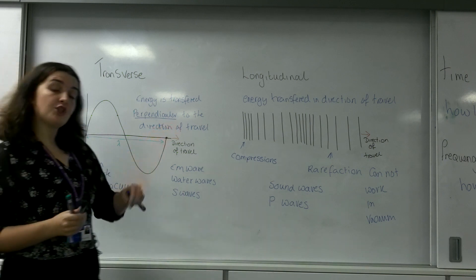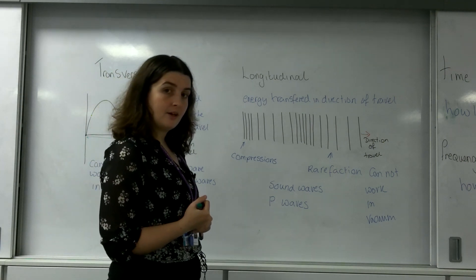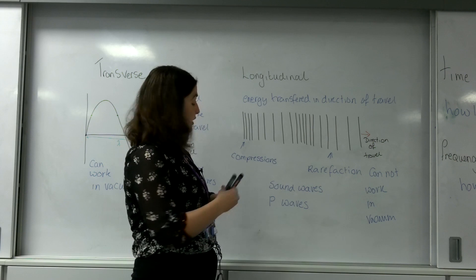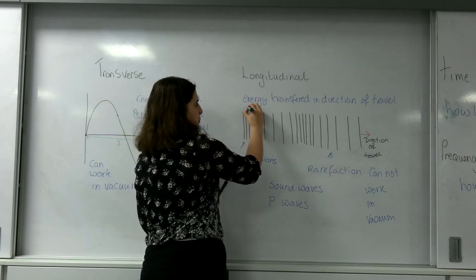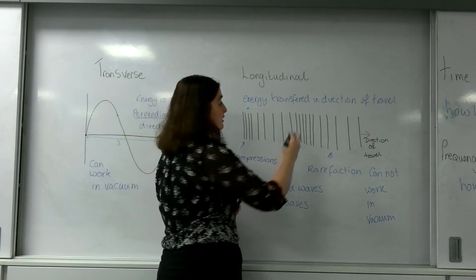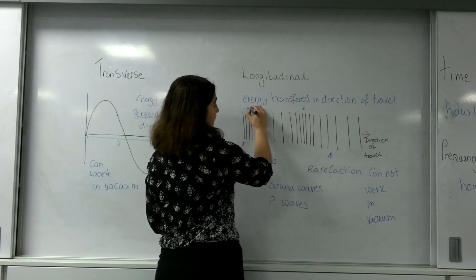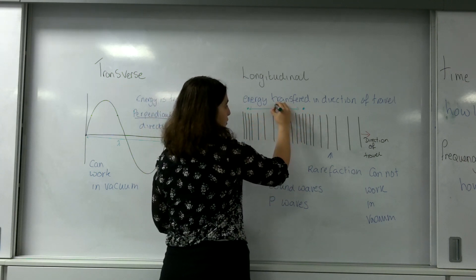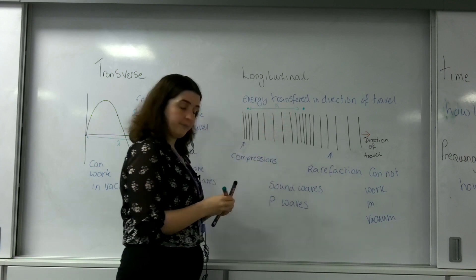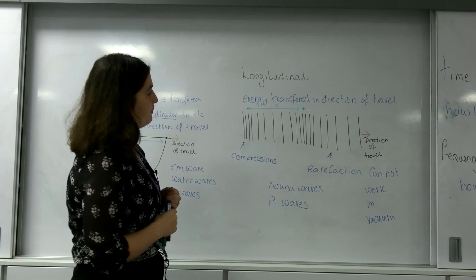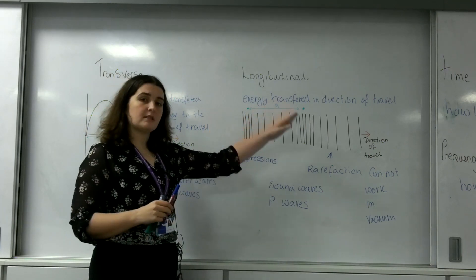For a longitudinal wave, it is from identical position to identical position. From the center of a compression to the next center of a compression, that is one wavelength. It's really important that you are doing it from the same point to the same point.